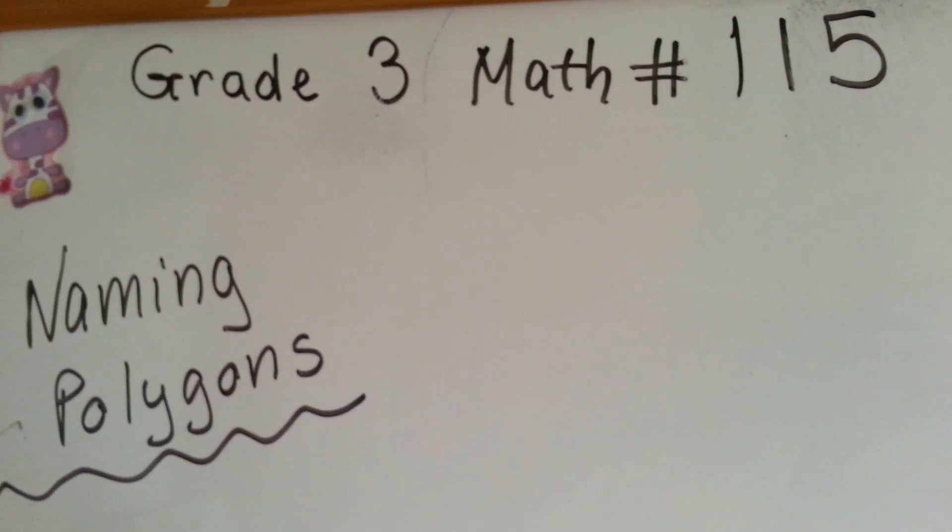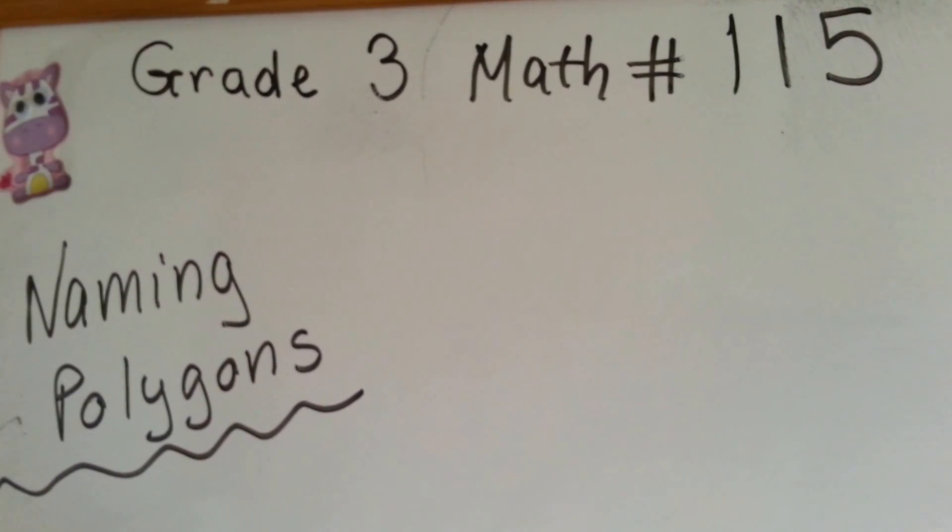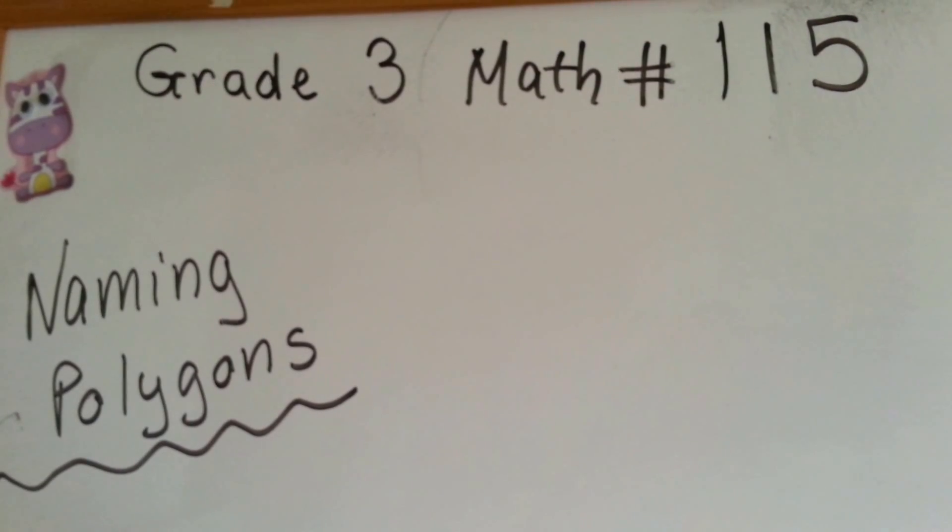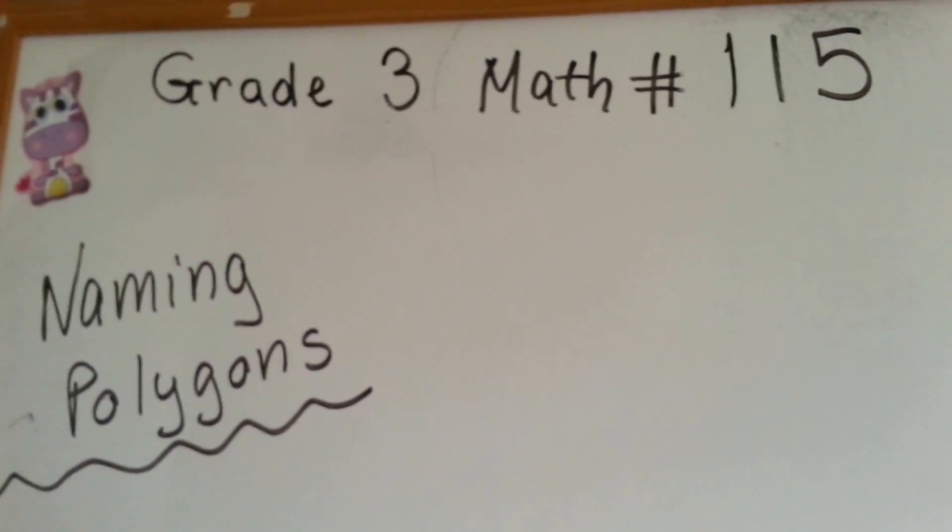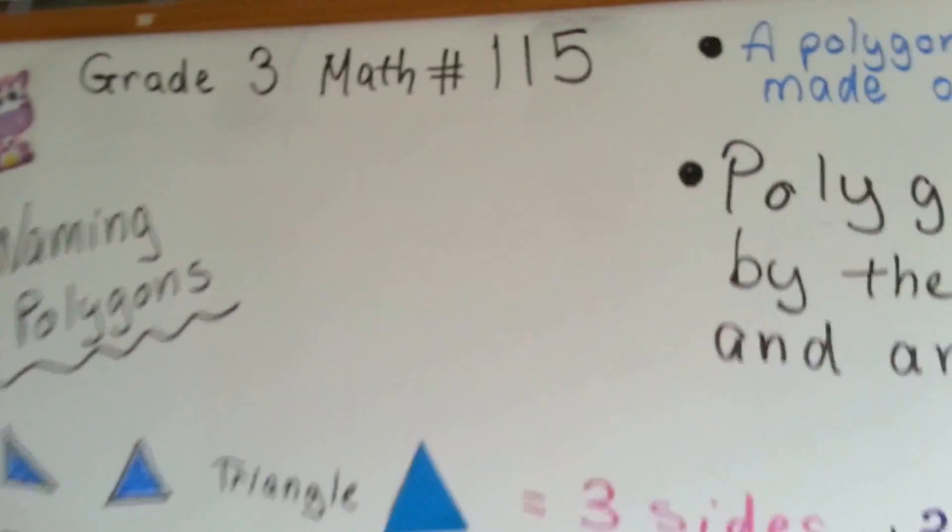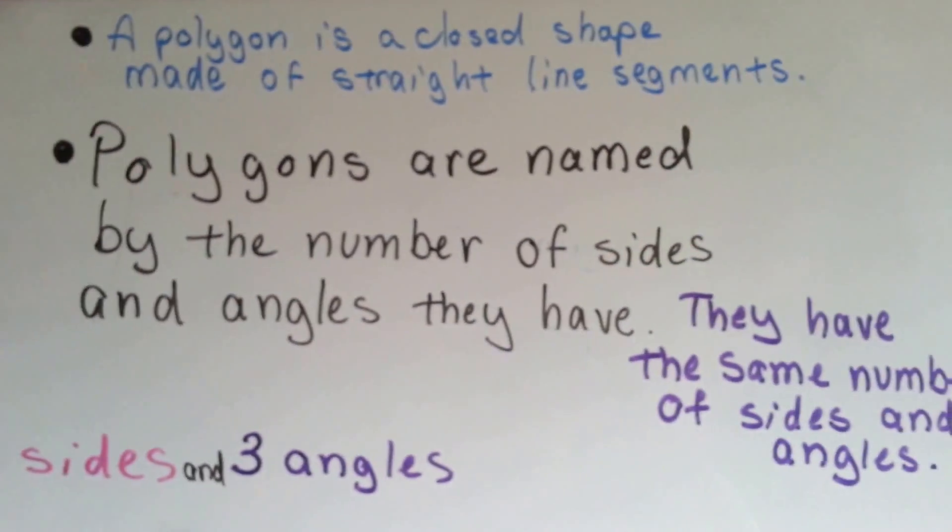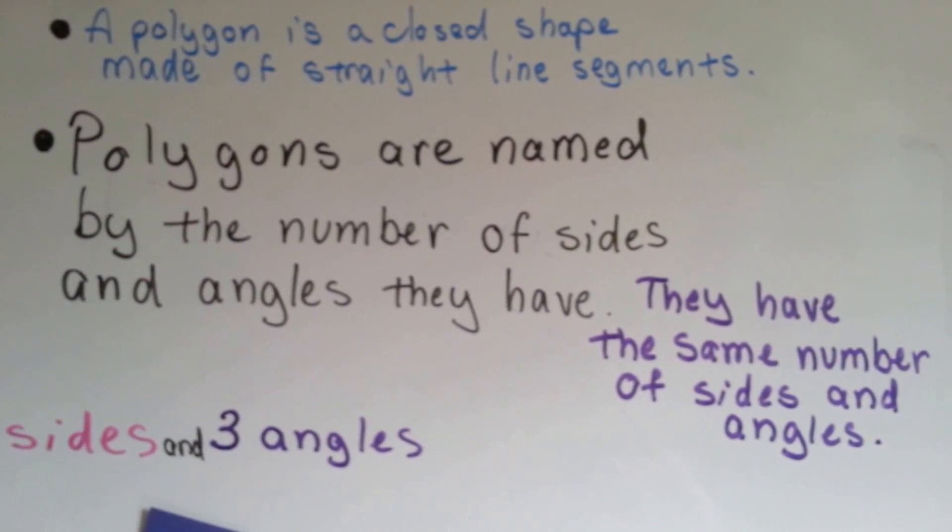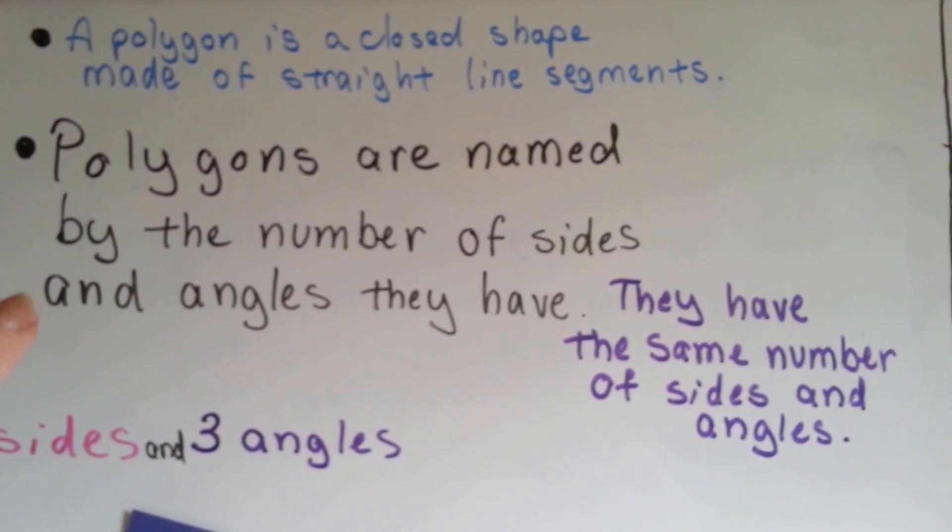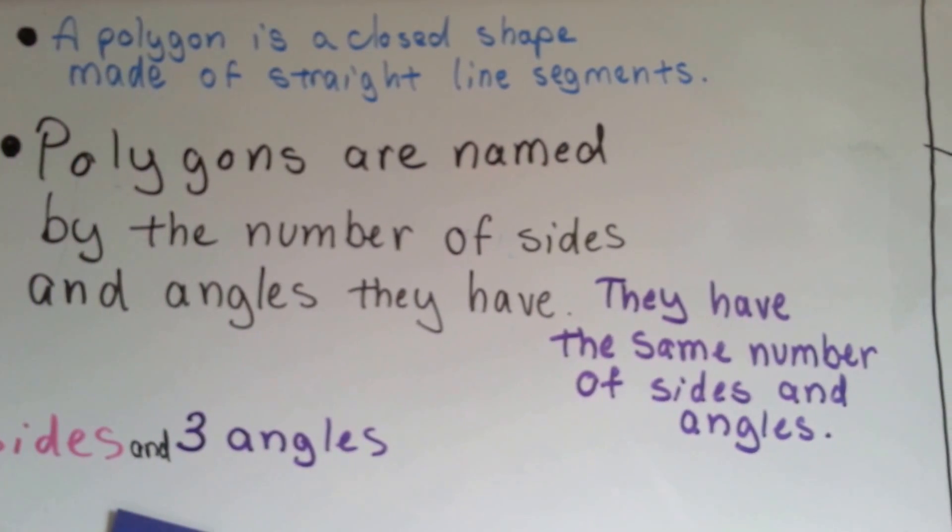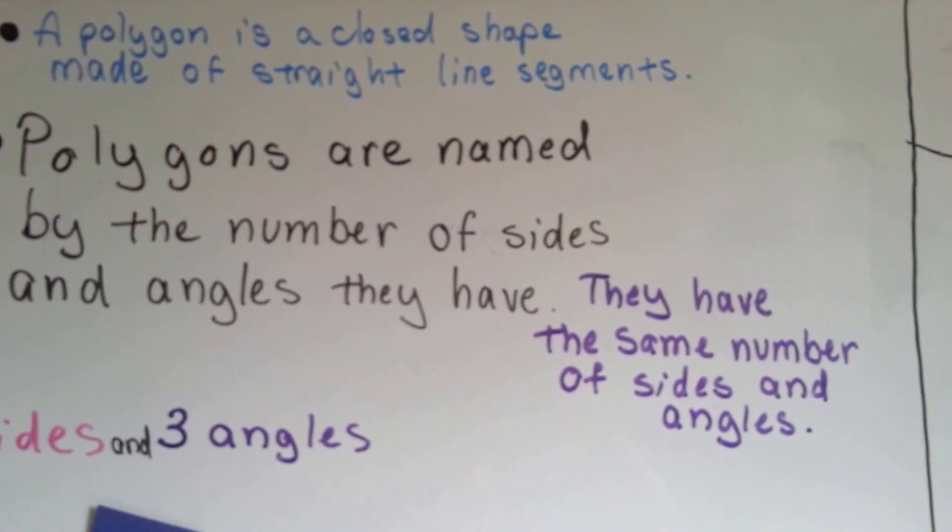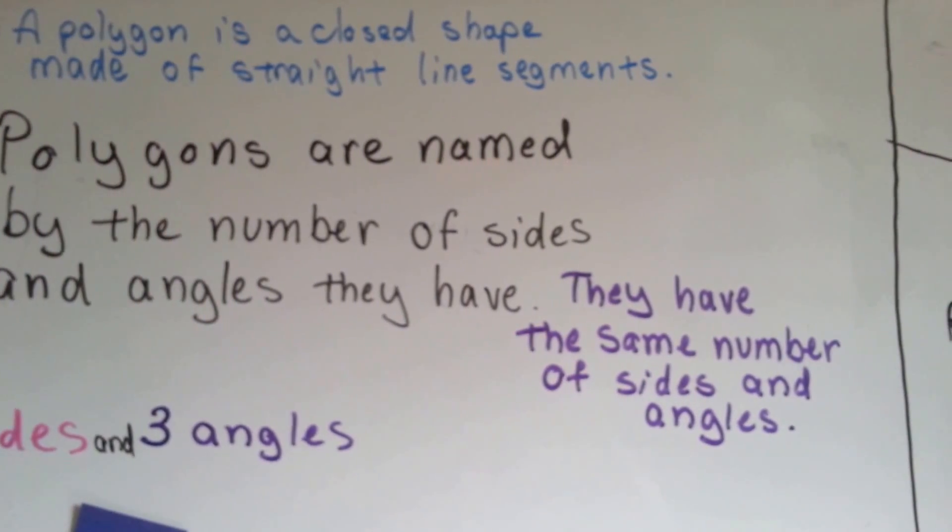Grade 3 Math, number 115, Naming Polygons. We talked a little bit about polygons before. We've been discussing geometry. So I'm going to go over polygons again just to show you some other stuff here. A polygon is a closed shape made of straight line segments. They're named by the number of sides and angles they have. They have the same number of sides as they do angles.